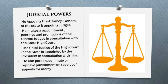Judicial powers: the governor appoints the attorney general of the state. He appoints judges to the subordinate courts and makes appointments, postings, and promotions of district judges in consultation with the state high court. The chief justice of the high court is appointed by the president in consultation with the governor. He can also pardon, commute, or reprieve punishments on receipt of appeals for mercy.